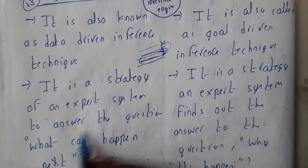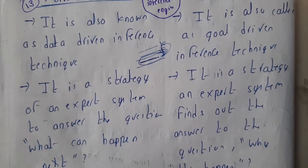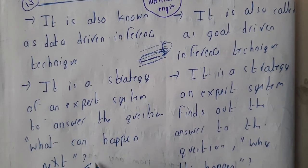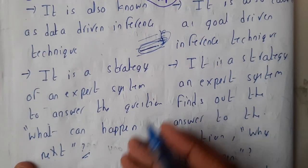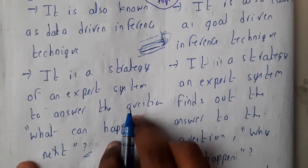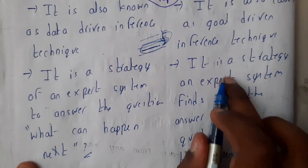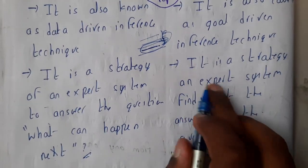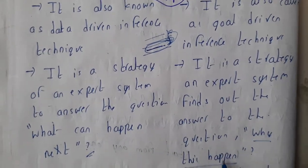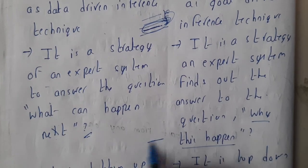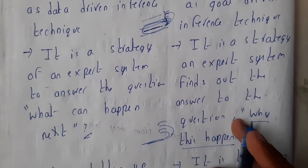With forward chaining, if you use these inputs you're going to get this result — like that it predicts. Backward chaining asks: why did this happen? So you start from the result and question how you got there. That's the reason backward chaining addresses 'why this happened.'